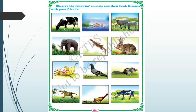Observe the following animals and their food and discuss with your friends. A cow eats grass. Fish eats small fishes and algae in water. Sheep eats grass. Elephant eats grass. Lizard eats cockroaches or insects. Rabbit eats carrot. Lion hunts and eats other animals. Pigeon eats grains. Squirrel eats nuts. Frog eats insects like grasshopper. Birds eat grains and sheep eats grass.